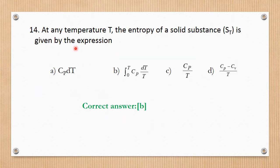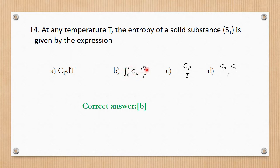Question number 14. At any temperature, the entropy of a solid ST is given by the integration of zero to T of Cp × dT / T. This is the entropy formula for a substance at any given temperature. The correct answer is B.